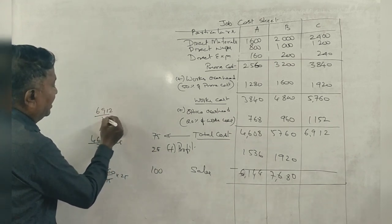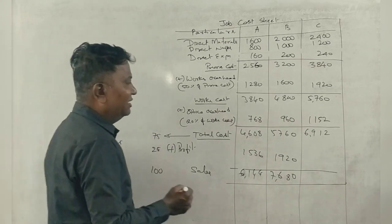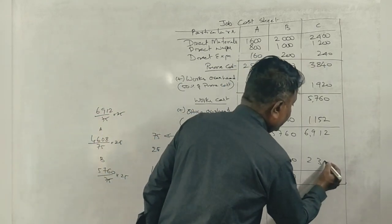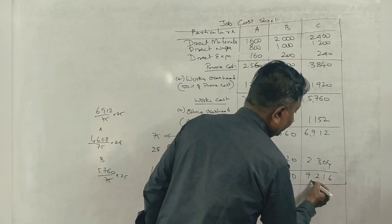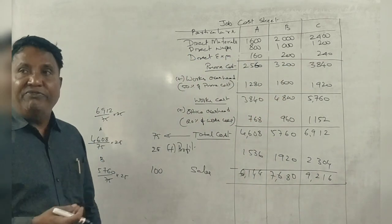Next, 6,912 is for 75%, what is for 25%? 2,304. Total 9,216. This question is 15 marks.